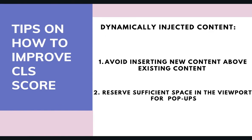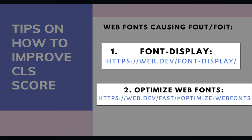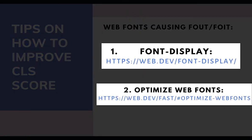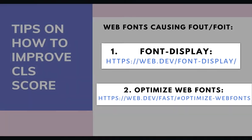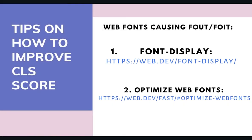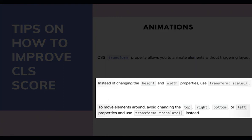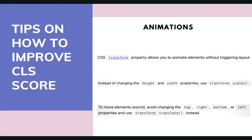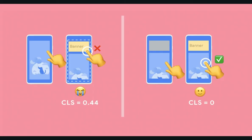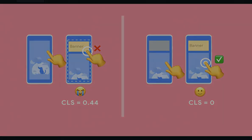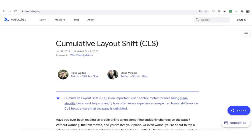For web fonts causing flash of unstyled text and invisible text, visit the links at web.dev for more information and optimization tips. For animations, prefer transform animations to those that trigger layout changes. Animate transitions in a way that they provide context and continuity from state to state. To learn more about Cumulative Layout Shift, go to web.dev/cls.